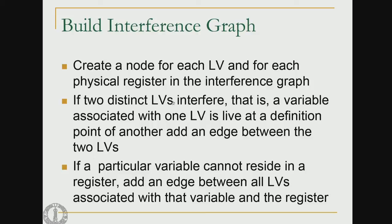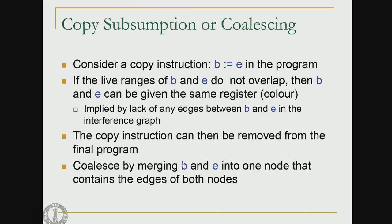To summarize how to build the interference graph: create a node for each live variable and for each physical register. If two distinct live variables interfere — meaning a variable associated with one live range is live at the definition point of another — add an edge between them. If a particular variable cannot reside in a register, add an edge between all live ranges of that variable and the register node.